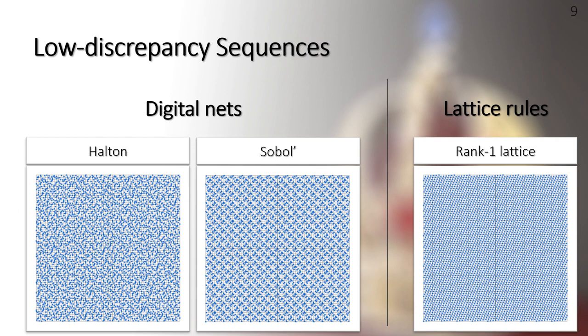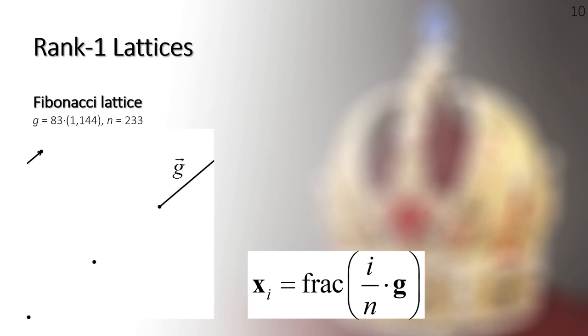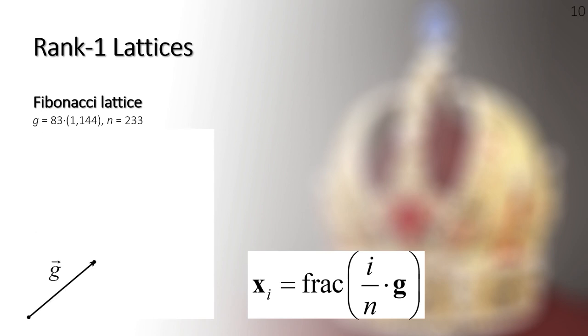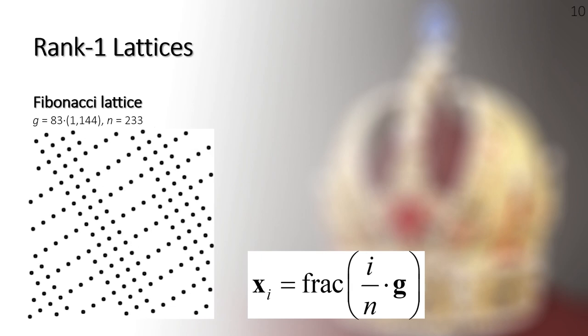There are many types of low-discrepancy sequences. One type is the digital nets. The ones that are commonly used in rendering are Sobol and Halton sequences. Another type of low-discrepancy sequences, which was developed and got popular in a similar time, is the lattice rule. Lattice rule is a kind of congruent generator. The most famous one is the rank-1 lattice. Given the total number of lattice points n and the s-dimensional generator vector, the rank-1 lattice defines n sample points on the s-dimensional hypercube. For instance, the following example takes the 2D rank-1 lattice to demonstrate how it works.